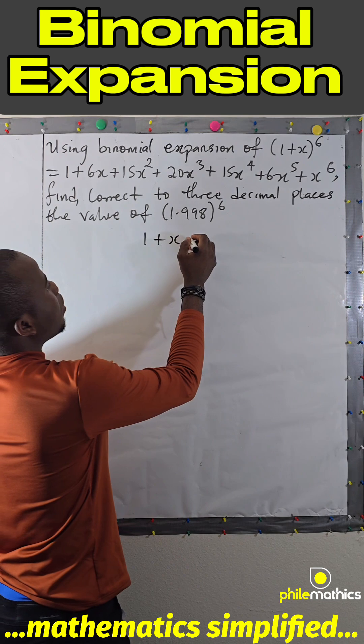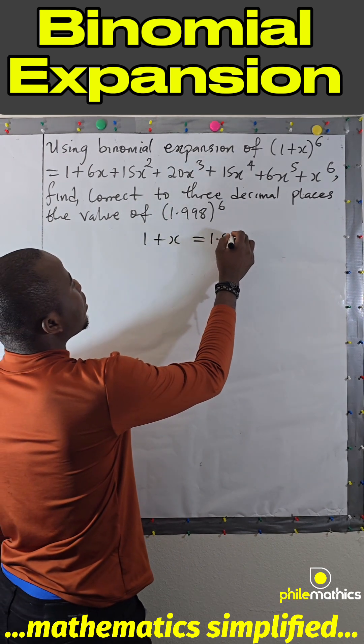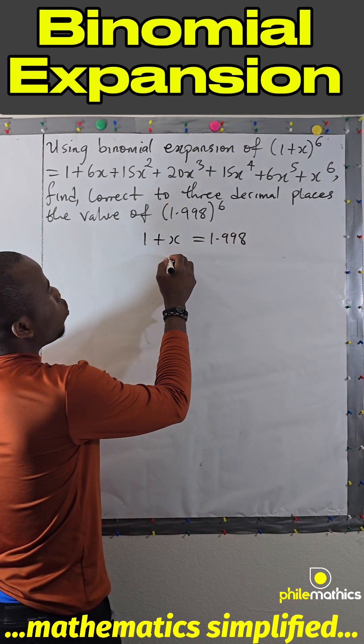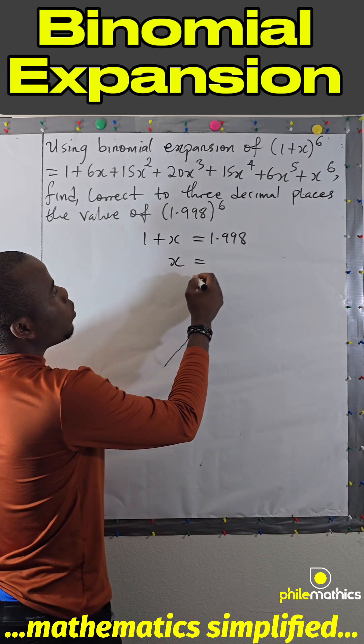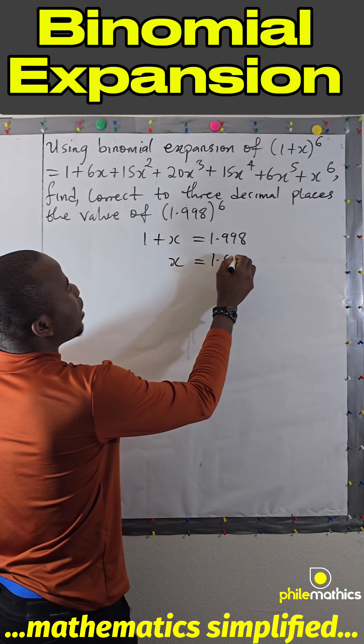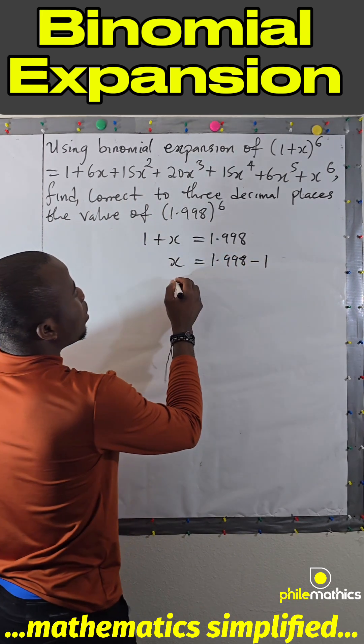1 + x must equal 1.998. So to find x, we subtract 1 from both sides: 1.998 - 1, which gives us x = 0.998.